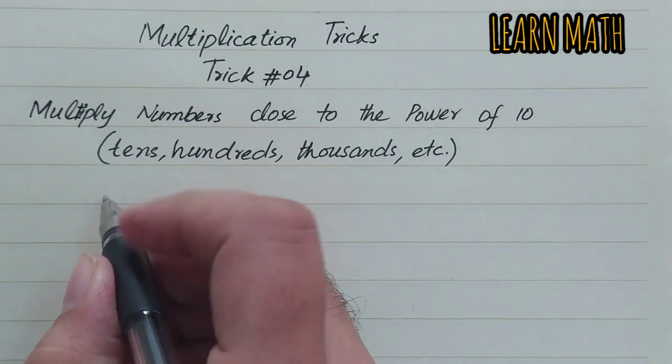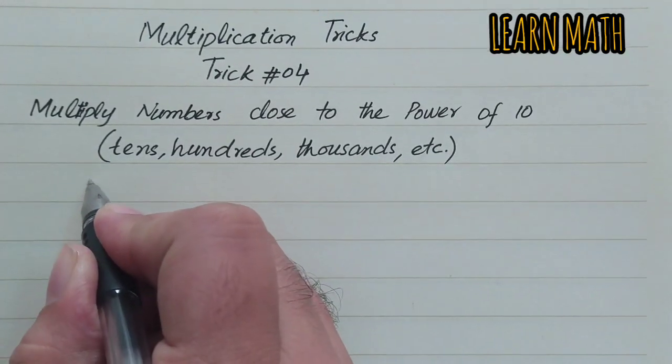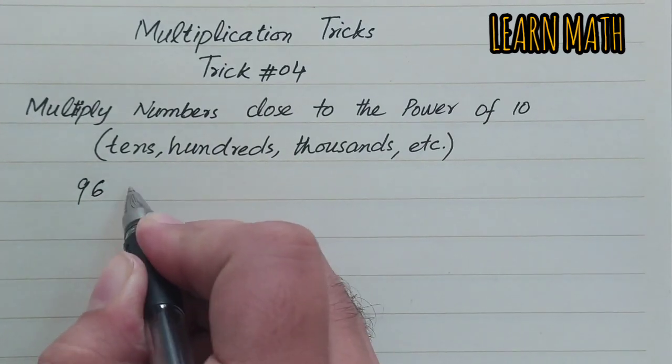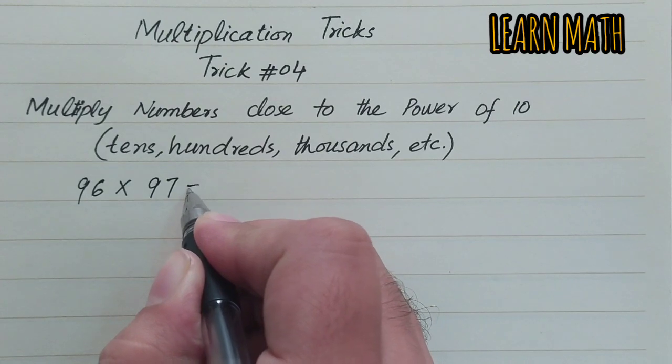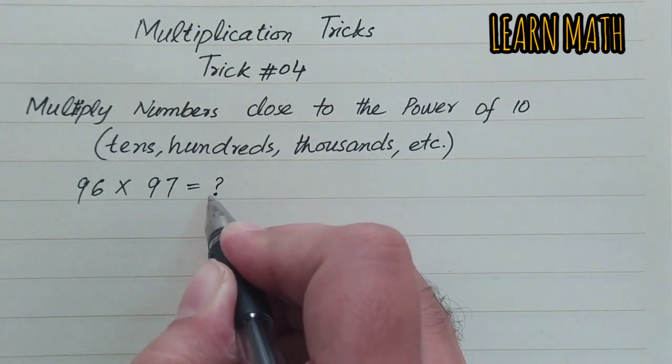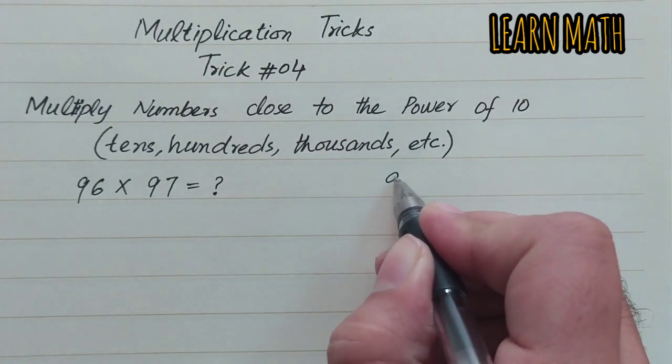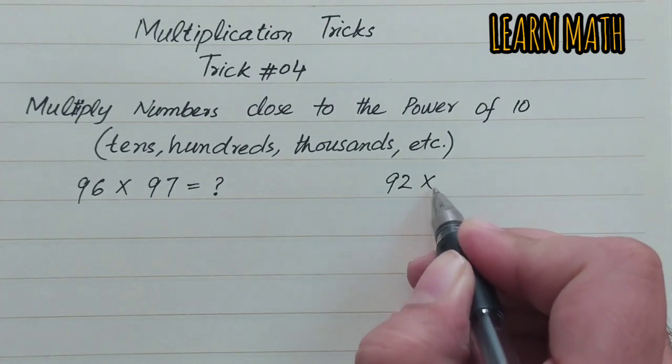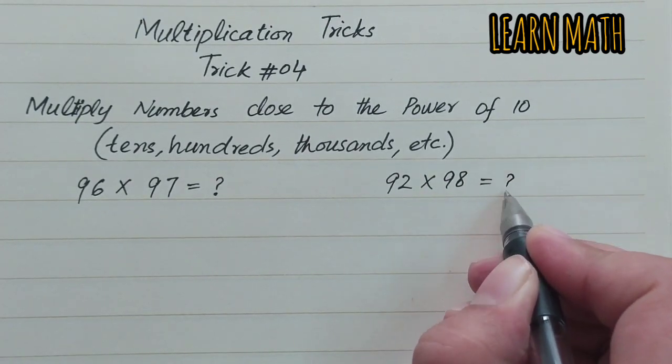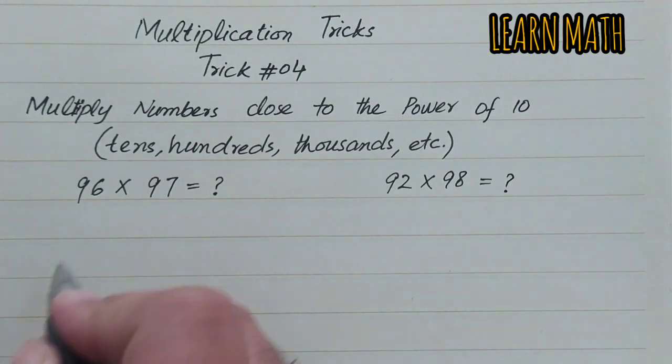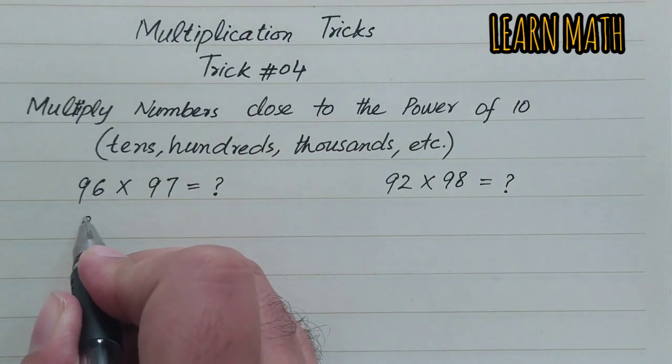Suppose we have two numbers, 96 and 97, and we want to multiply these numbers. Another example: if we have two numbers, 92 and 98, and we want to multiply these numbers, what is the trick? First, we will write 96, then we will write 97.